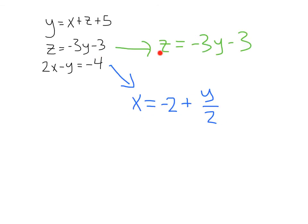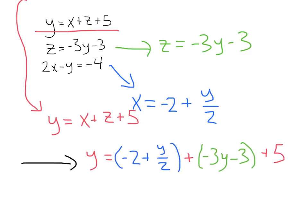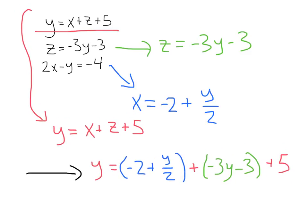Alright, check this out. I've got my z written in terms of y. I've got my x written in terms of y. Now, let's go ahead and plug those into this first equation. If I do that, I'm going to get y equals, and instead of x, plug in negative 2 plus y over 2, plus z, plugging in my z, negative 3y minus 3, plus 5. Now, if I solve from there, that's going to give me a y value of 0.